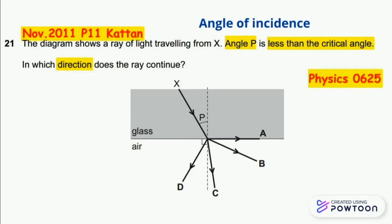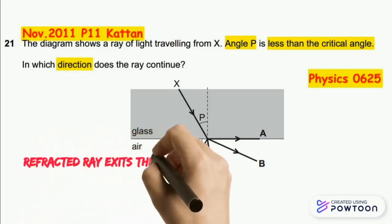If the angle of incidence is less than the critical angle, there is no total internal reflection and the light ray exits the glass to the air.